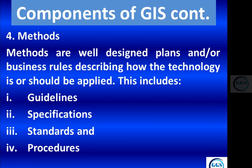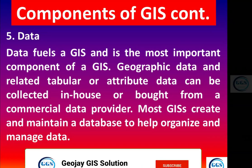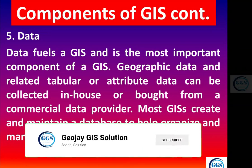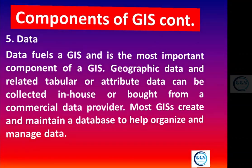The fifth component of GIS is data. Data is the crux of GIS — without data there is nothing you can do. Data also happens to be one of the most expensive components of GIS in terms of collection. Geographic data and related tabular or attribute data can be collected in-house or bought from a commercial data provider. Most GIS systems create and maintain a database to help organize and manage data.